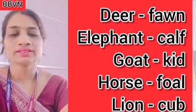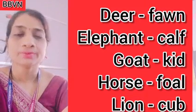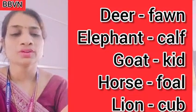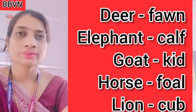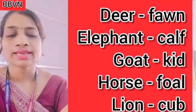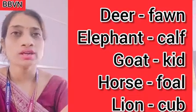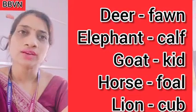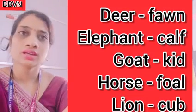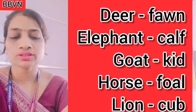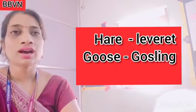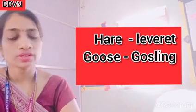Next is sheep — the baby of sheep is known as lamb. Sheep → lamb. Next is goat — the baby of goat is known as kid. Goat → kid. Next is horse — the baby of horse is called foal, F-O-A-L. Next is lion — the baby of lion is called cub, C-U-B. Next is hare — the baby of hare is called leveret, L-E-V-E-R-E-T. Next is goose — the baby of goose is known as gosling, G-O-S-L-I-N-G.